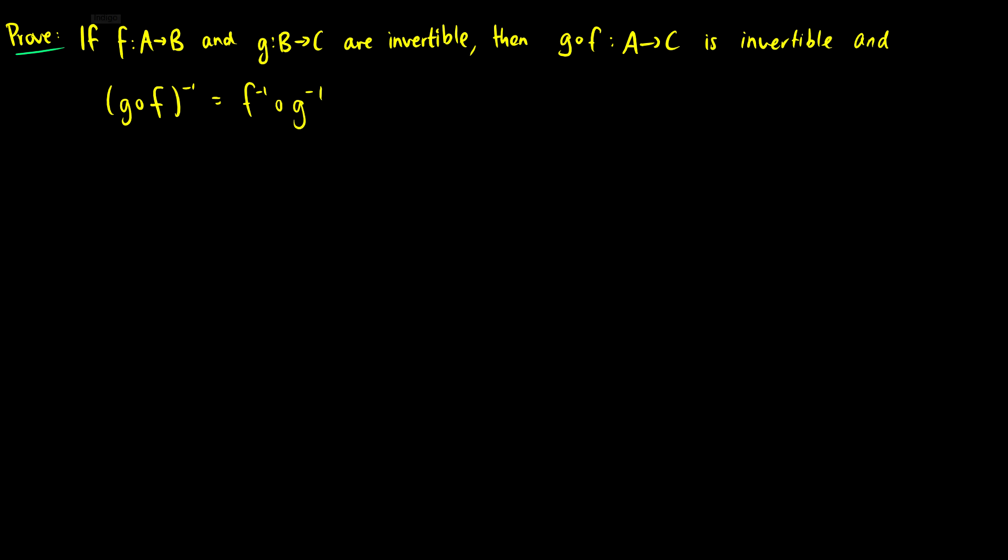So f and g are invertible. This means that f is bijective and g is bijective. Because f is bijective and g is bijective, this is concluding that g∘f is going to be bijective.